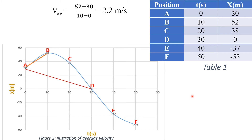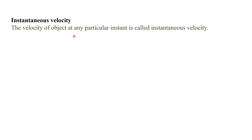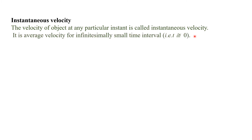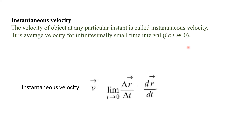Similarly, we can calculate the average velocity of an object between any two points. Instantaneous velocity: the velocity of an object at any particular instant is called instantaneous velocity — it is the average velocity for an infinitely small time interval as t tends to 0. Instantaneous velocity V = limit as Δt → 0 of Δr/Δt = dr/dt. We calculate it by taking two points very close to the instant of interest and finding the difference of velocities to get the velocity at that middle instant.